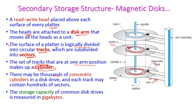There are thousands of concentric cylinders in a disk drive, and each track may contain hundreds of sectors. The storage capacity of a disk drive is measured in gigabytes — a single magnetic disk can store gigabytes of data.